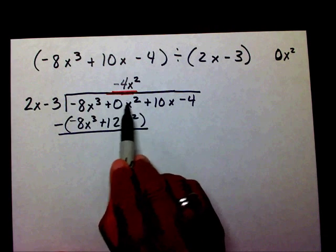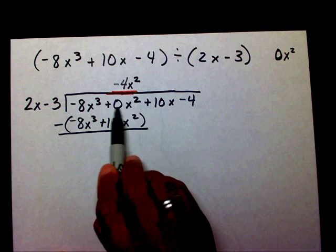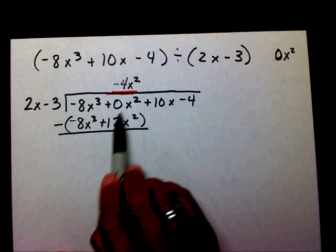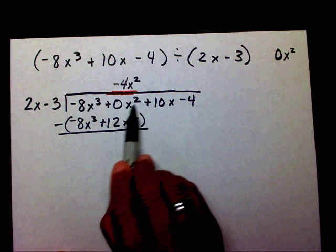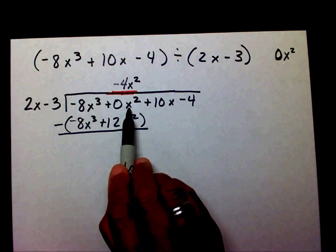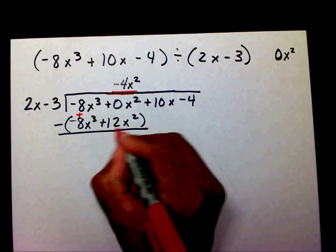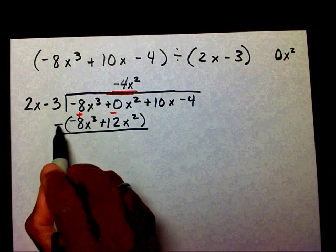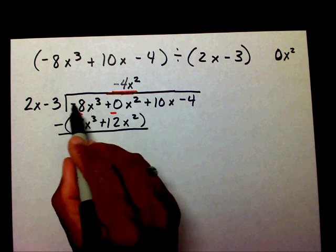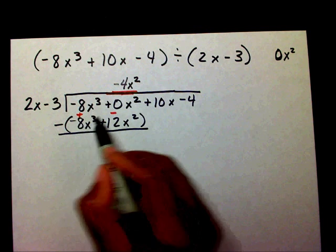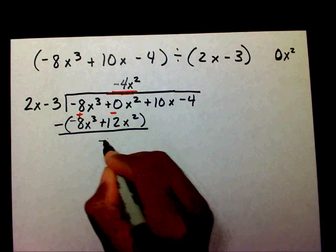Now, if I did not have this 0x squared here, this 10x would be in this position, and I would not be able to subtract 10x minus 12x squared. That's why I have to put the x squared in this position. So let me change my signs. This negative will become a positive and this positive will become a negative, because I'm distributing my negative — multiplying each term by negative 1. Negative 8x to the third plus 8x to the third leaves 0. So 0x squared minus 12x squared leaves me with negative 12x squared.